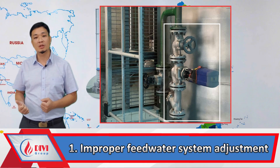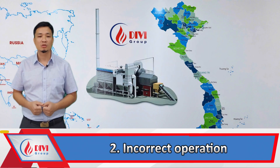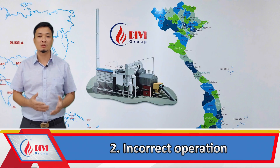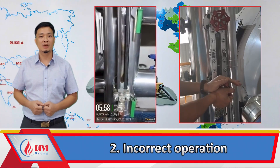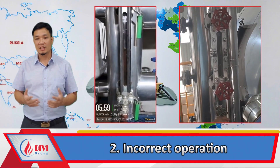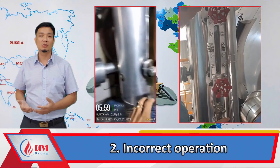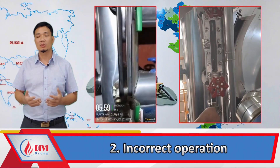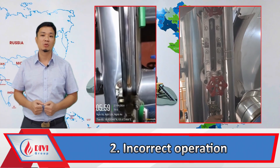Cause 1.2: incorrect operation. The operator fails to thoroughly check the water level before starting the boiler, leading to excessive water supply. As the water heats up, it expands in volume and overflows. The operator may also neglect to monitor the sight glass or the signals from the water level system during operation.